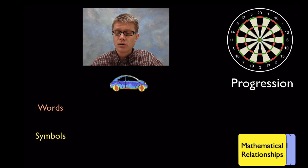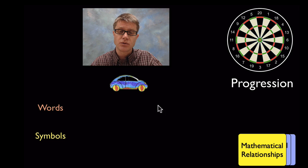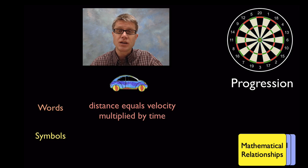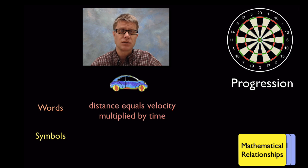We also want them to look at mathematical relationships. And so we want them to start using words and then those words eventually become symbols. And so if we're studying motion in a car for example we could have them come up with sentences like this: Distance equals velocity multiplied by time. So we want them to start by looking at words and explaining what they're seeing or their observations. But we want to transition that to symbols, math that we can then manipulate and use to refine our theories.